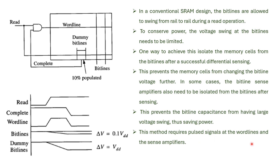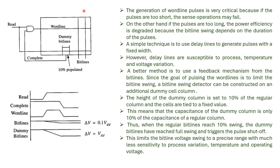This method requires pulsed signals at the word line and the sense amplifiers. Dummy bit lines are included to perform proper read operations for power saving. The generation of word line pulses is very critical: if the pulses are too short, the sense operations may fail. On the other hand, if the pulses are too long, the power efficiency is degraded because the bit line swings during the duration of the pulses. A simple technique is to use a delay line to generate pulses with a fixed width.